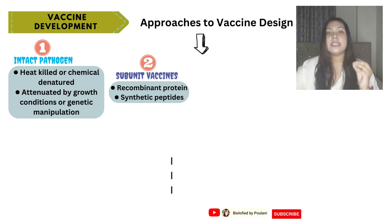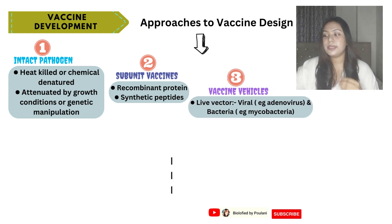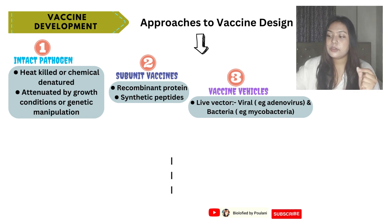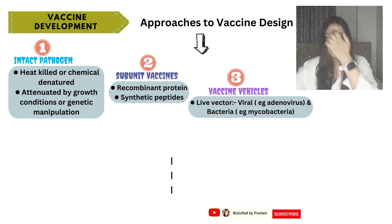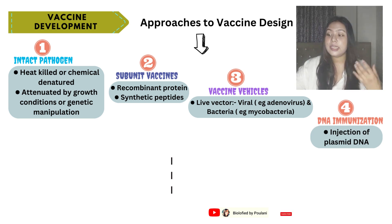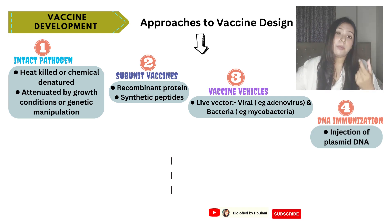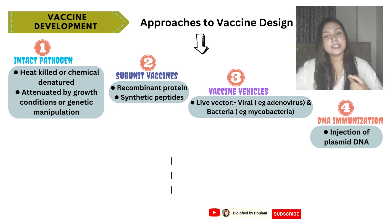Next are vaccine vehicles. In vaccine vehicles, a live vector is used — it could be viral, for example adenoviruses, or bacterial, in the case of mycobacteria. The fourth approach is DNA immunization — simply an injection of plasmid DNA, by which vaccine development occurs.